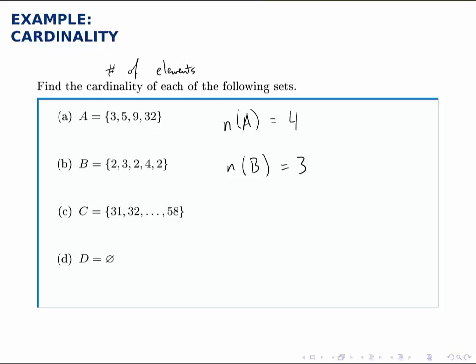Part C, you notice that not all of the elements are listed, but it's easy to see the pattern. It's all the integers starting at 31 and ending at 58. We can count them by hand, but we can also do some subtraction to figure out how many there are.